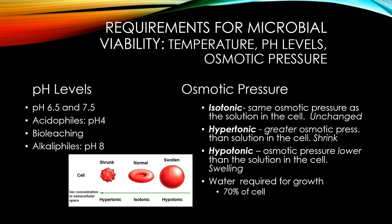Some microbes, such as obligate halophils, need a super salty environment — those living in the Dead Sea like about 30% salt. Facultative halophils don't require a high salt concentration but can grow at up to about 2% salt. If a cell is in a hypotonic solution, water enters the cell, which can cause the cell to rupture or burst — that's called lysis. An isotonic solution gives a normal environment with no water movement whatsoever.